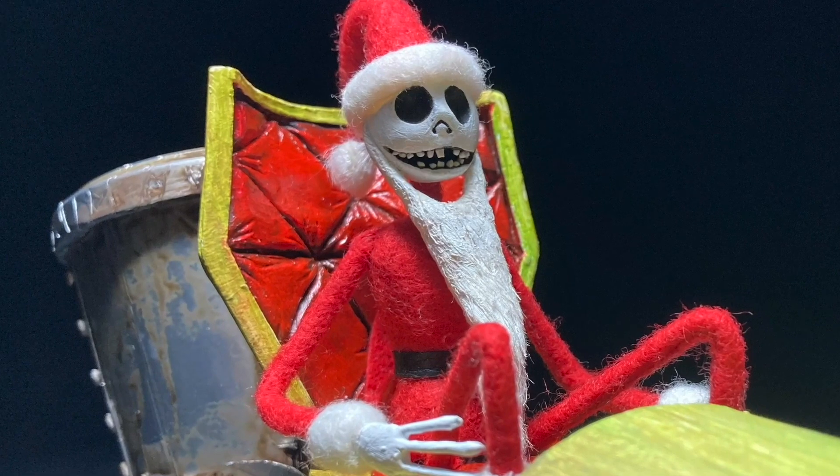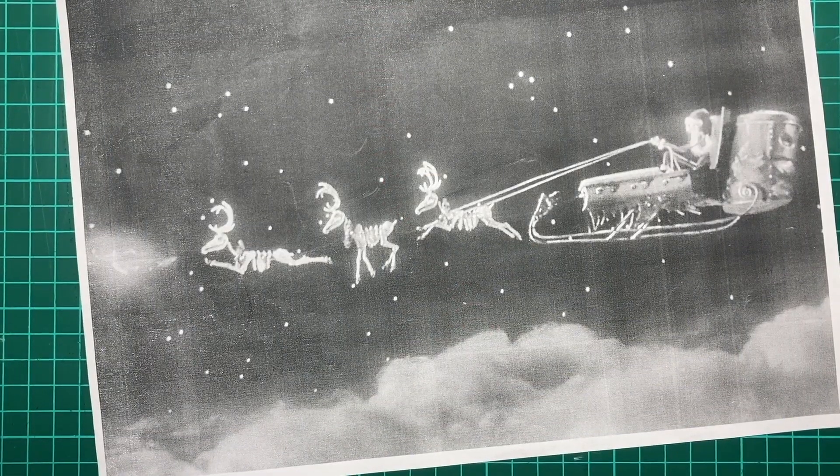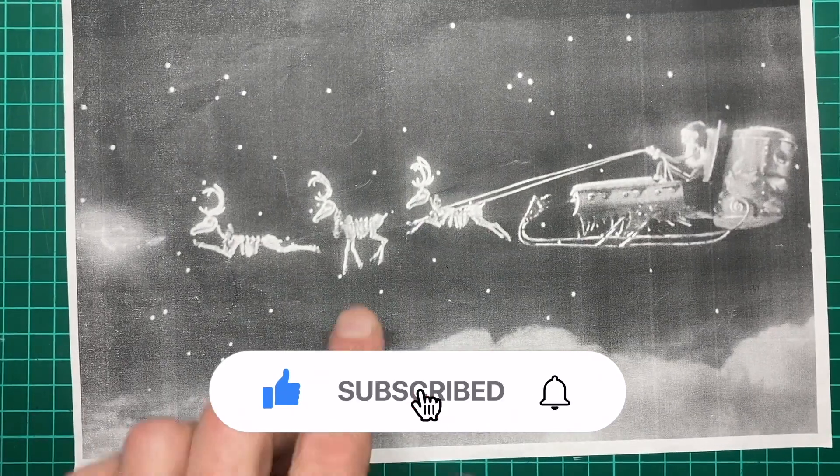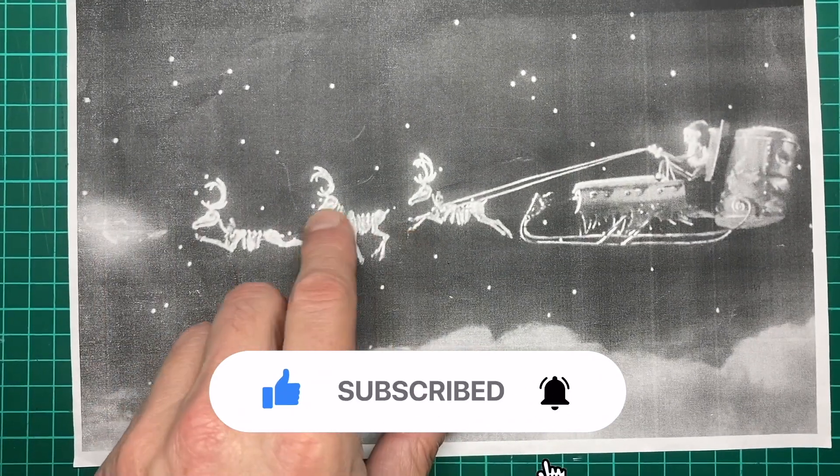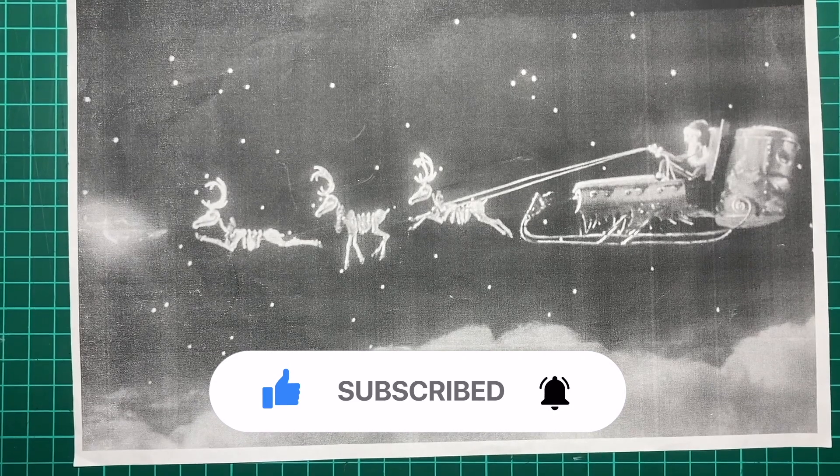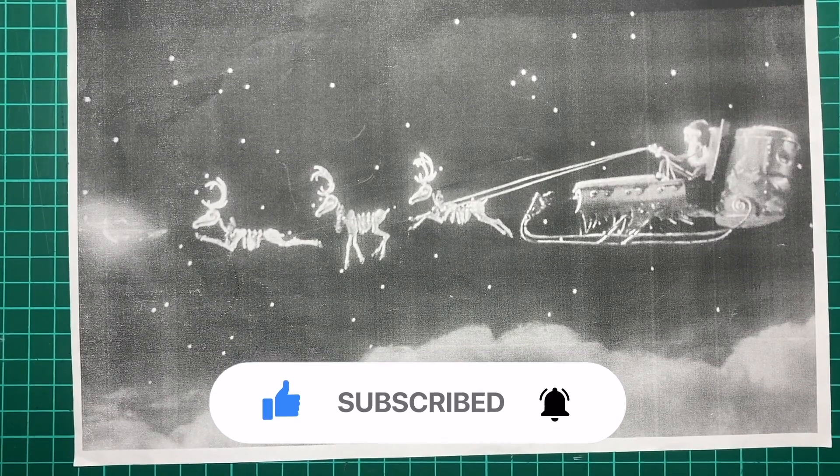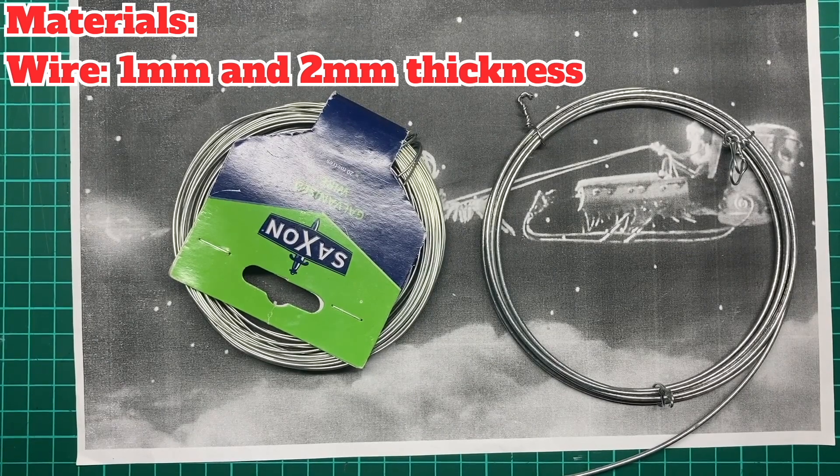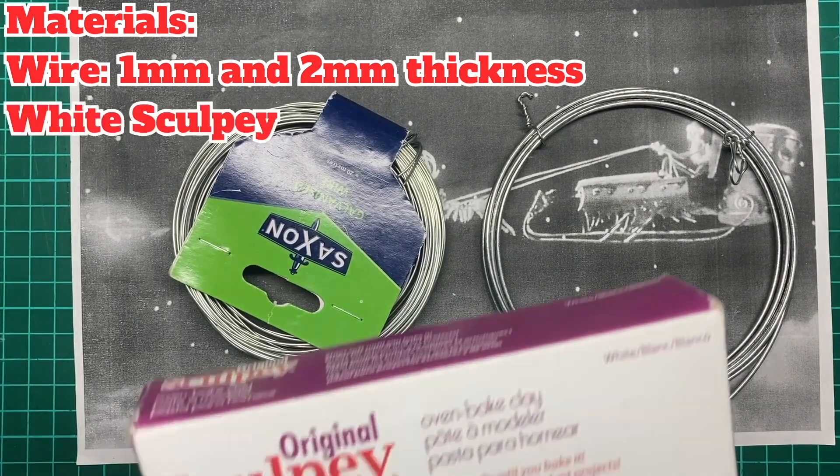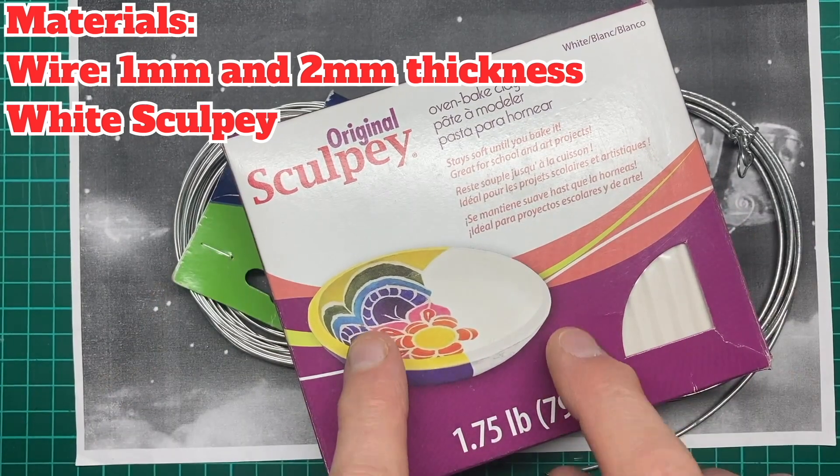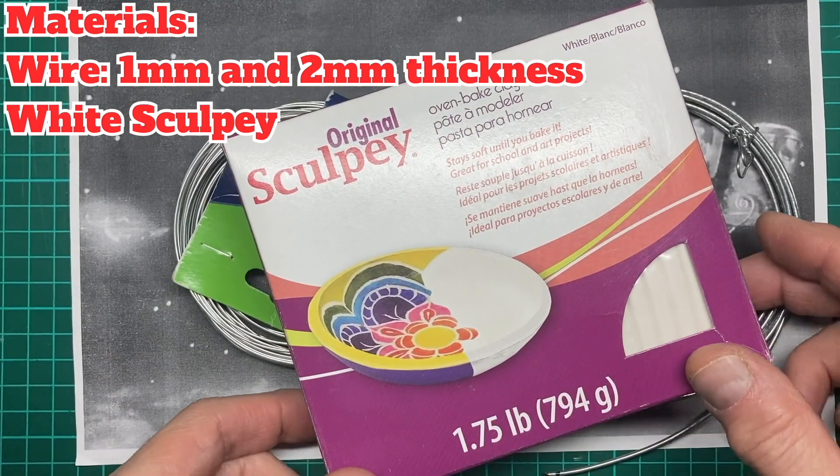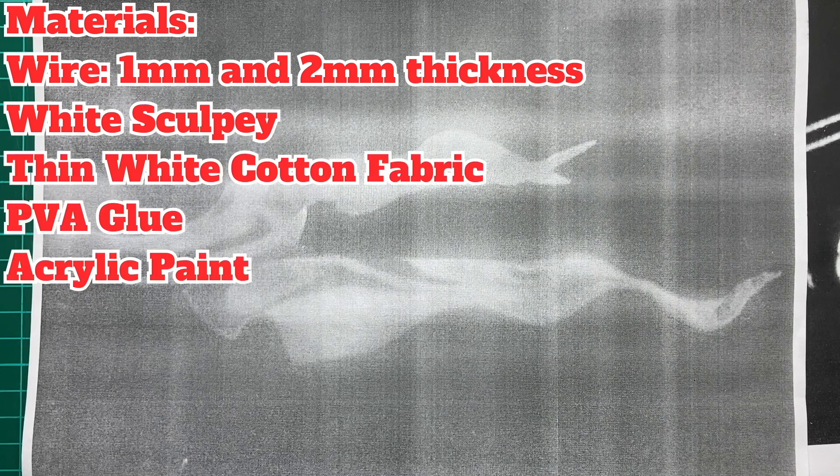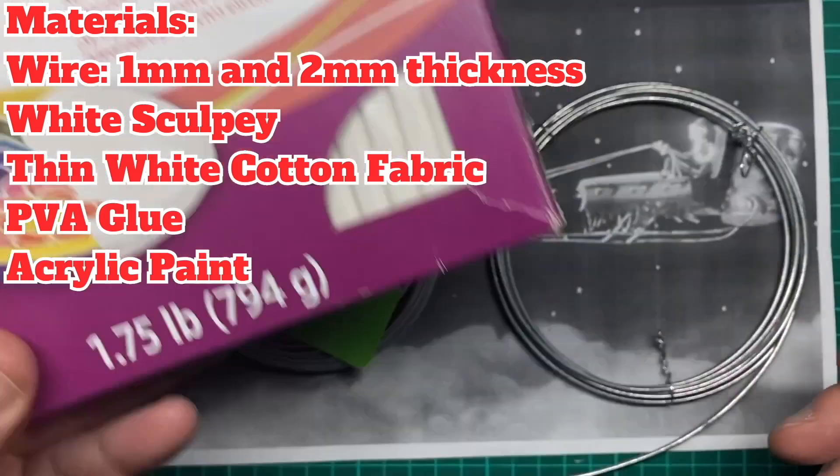Last time we did Jack Skellington, so for the reindeer this week we're not going to need much actually because it's mainly a sculpting job. I'm going to do a skeleton for them, a skeleton for their skeleton out of wire. So I have those two wire thicknesses which is what I need and the only other thing I need is Sculpey. So it'll all be baked in Sculpey so that it's nice and solid. For Zero there will be a bit of fabric required but basically it's just a sculpting job.